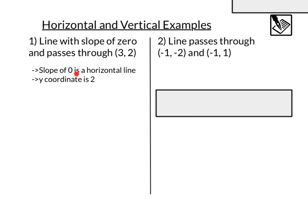So we've got a slope of 0, we know that's a horizontal line. The y coordinate is 2, and we know horizontal lines have that y equals format. This equation is going to be y equals 2.